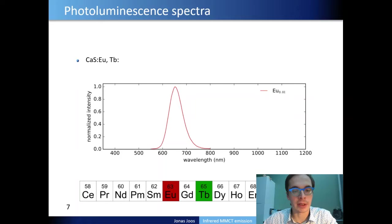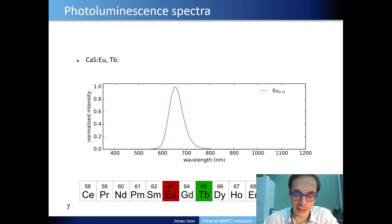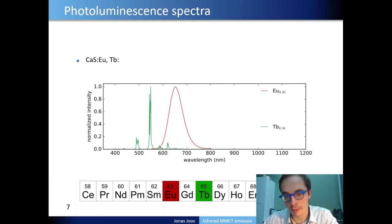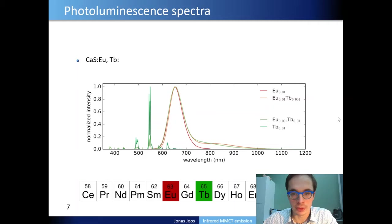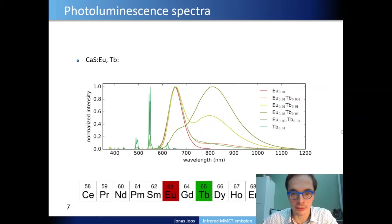Here we will use Terbium as a co-dopant and show you some spectra. The emission spectrum from calcium sulfide doped with only Europium shows the well-known broadband red emission peaking around 650 nm. If we dope calcium sulfide with Terbium we get the typical green Terbium spectrum from the intra 4F⁸ transitions. But something special happens when you combine Europium and Terbium in this host: in addition to the red Eu²⁺ emission, you see emission originating in the near infrared range. As we increase the concentrations, this near infrared emission grows, and at even higher concentrations the near infrared emission dominates the entire emission spectrum.